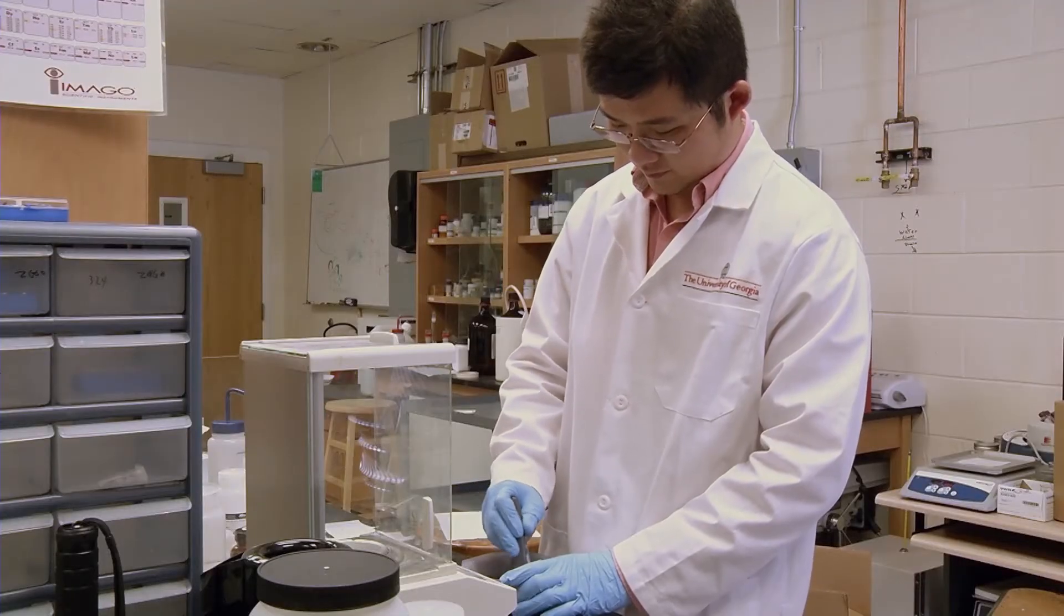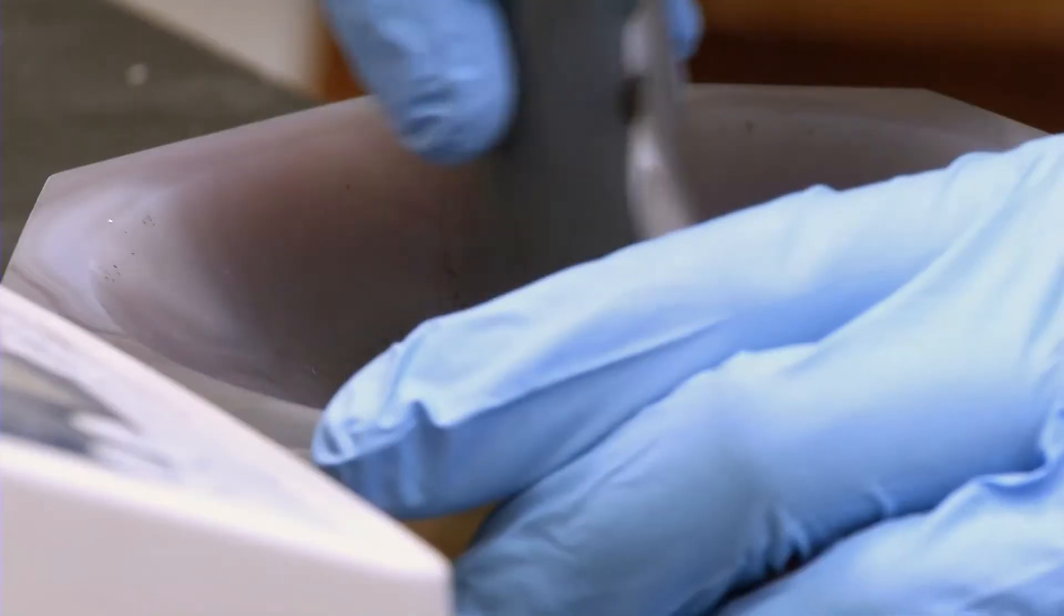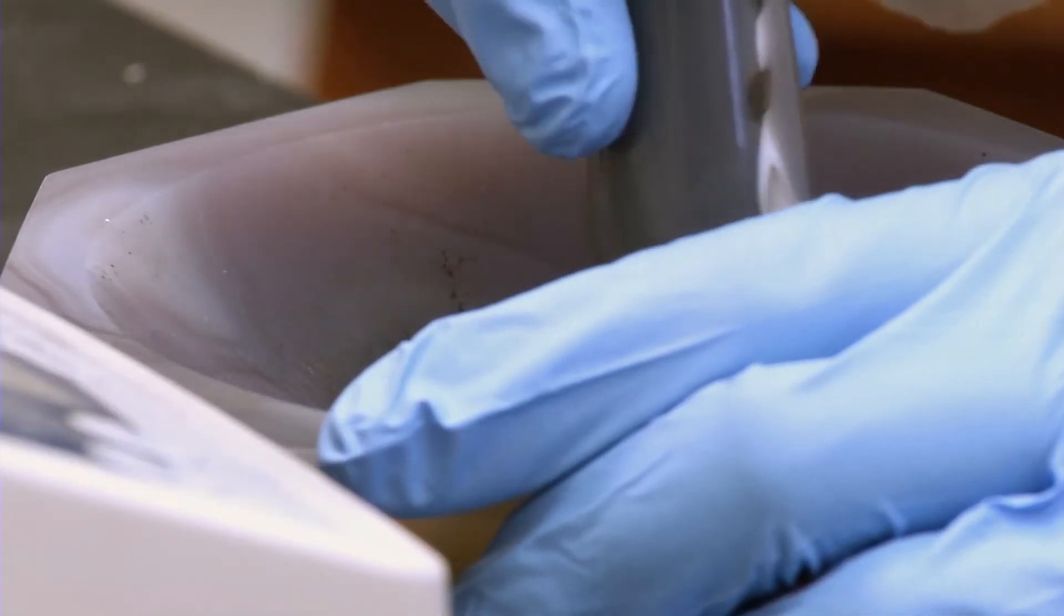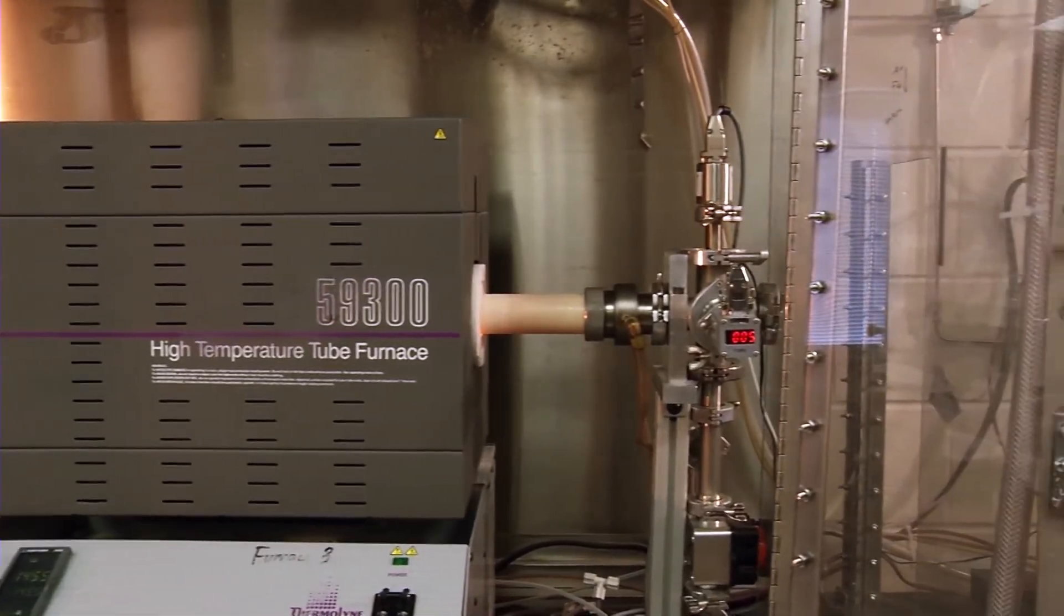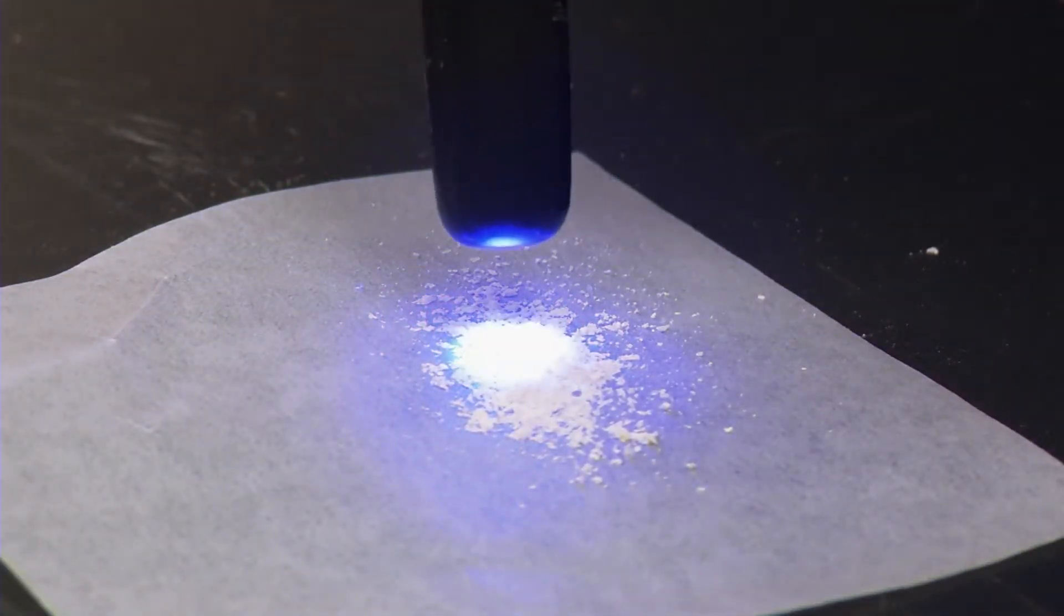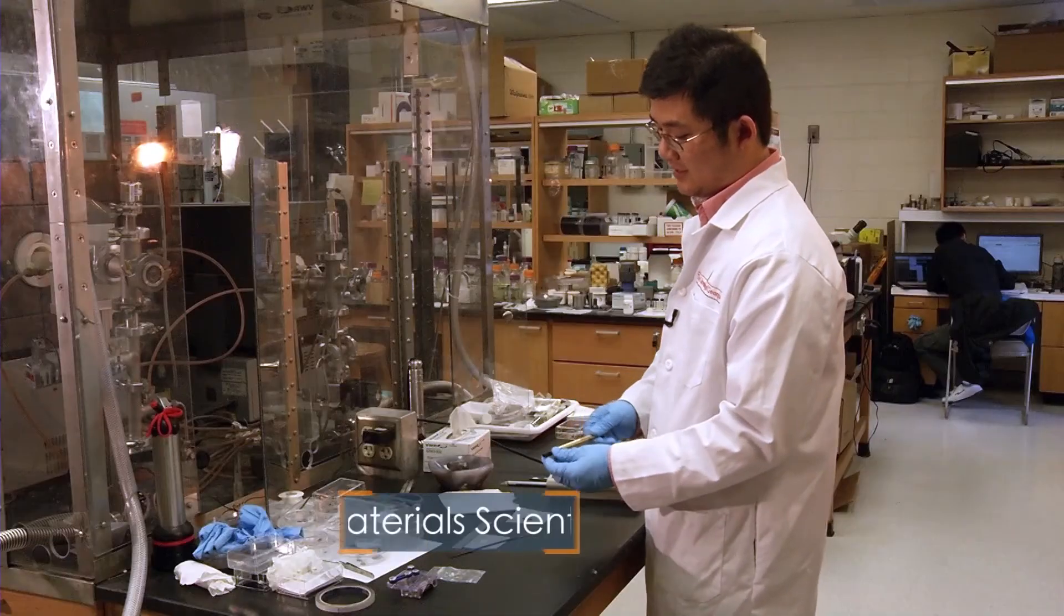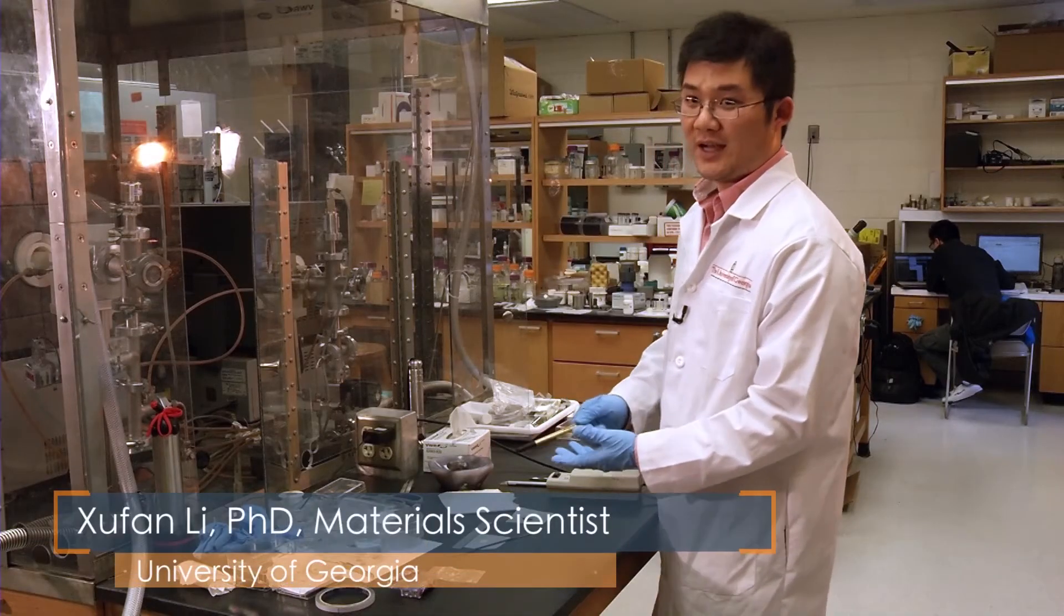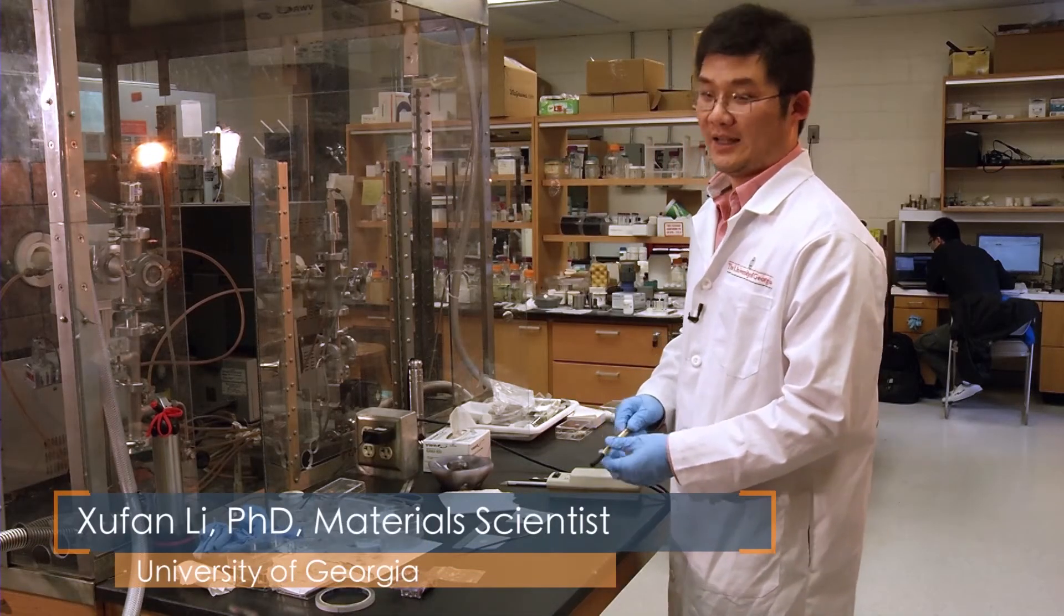Scientists mix together different materials to create a new phosphor that is just the right color. They heat the materials, turning them into a yellow powder. When it's lit with a blue LED chip inside a bulb, warm white light appears. The yellow light combined with the blue light gives you the white light.